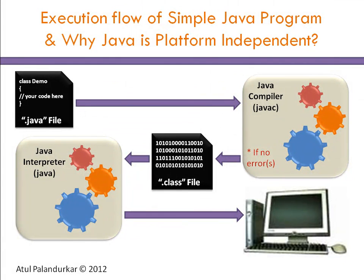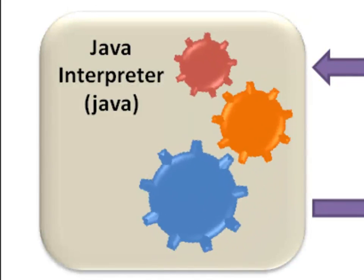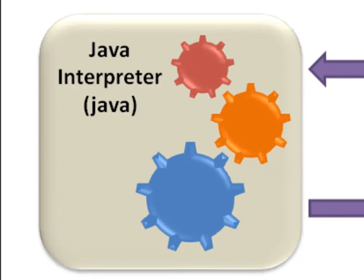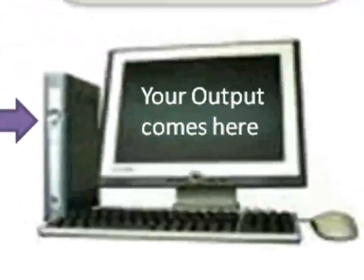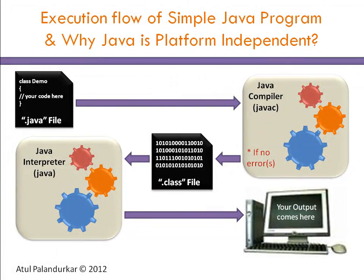The .class file is a binary-coded file which is completely dependent on components provided by the Java interpreter and does not depend on the tools and components available in the operating system. Therefore, we can run a Java program on any operating system — only the Java interpreter needs to be installed. The Java interpreter will interpret each and every statement from the class file and produce the output on any operating system. Hence, we can say Java is platform independent. Thank you.